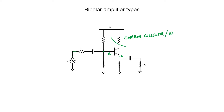Another name for this type of amplifier is an emitter follower. It's called an emitter follower because whatever voltage you apply to the base is just going to show up at the emitter — the voltage at the emitter follows the voltage at the base. For that reason, it's also sometimes called a voltage follower. Just remember that it's a common collector amplifier because the collector is not attached to either the source or the load.